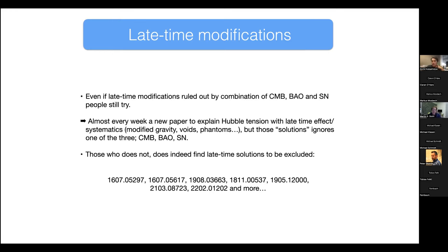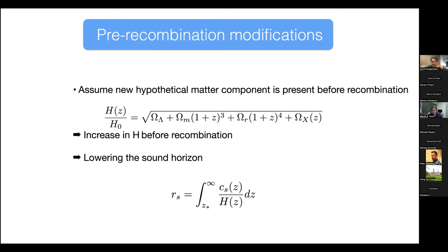There are many suggestions trying to solve the Hubble tension with late-time physics, like modifying the dark energy equation of state or late-time modified gravity. Those things are not working. If papers claim it works, it is because they ignore one of the data sets — CMB, BAO, or supernovae. There is abundant literature showing that all late-time solutions to the Hubble tension are excluded when all three data sets are included. We need to modify physics before recombination.